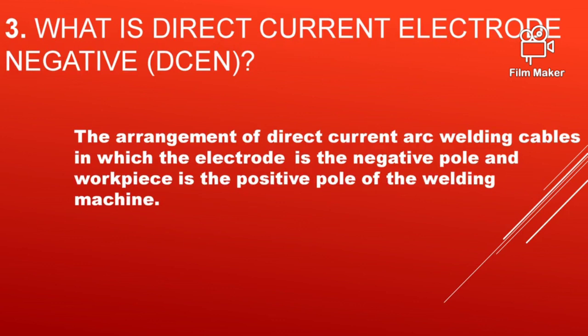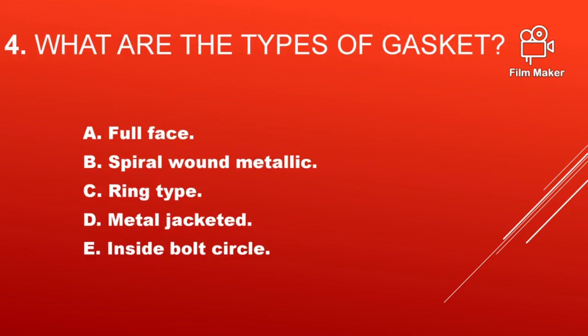What is Direct Current Electrode Negative, that is DCEN? It is the arrangement of direct current arc welding cables in which the electrode is the negative pole and the workpiece is the positive pole of the welding machine. In this polarity, we will get a higher penetration rate.